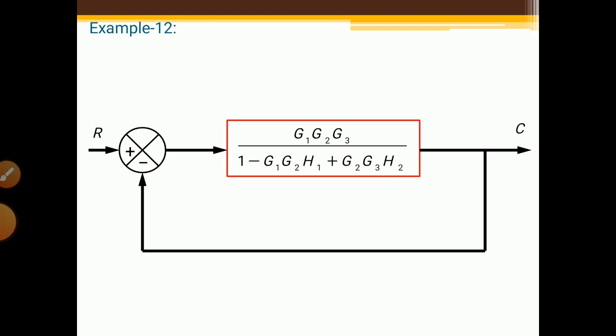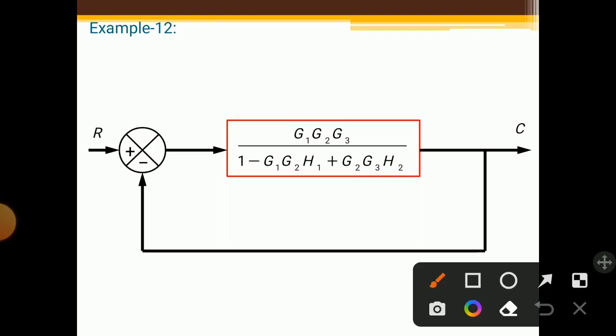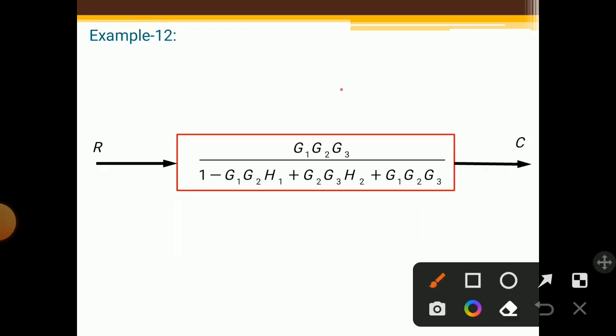At the end we have only one feedback loop remaining, which is a negative feedback loop. If nothing is written over the feedback path, we write 1. After solving this final feedback loop, we get: G1G2G3 / (1 − G1G2H1 + G2G3H2 + G1G2G3). There is only one input and one output. This is how we solve and simplify such block diagram problems.